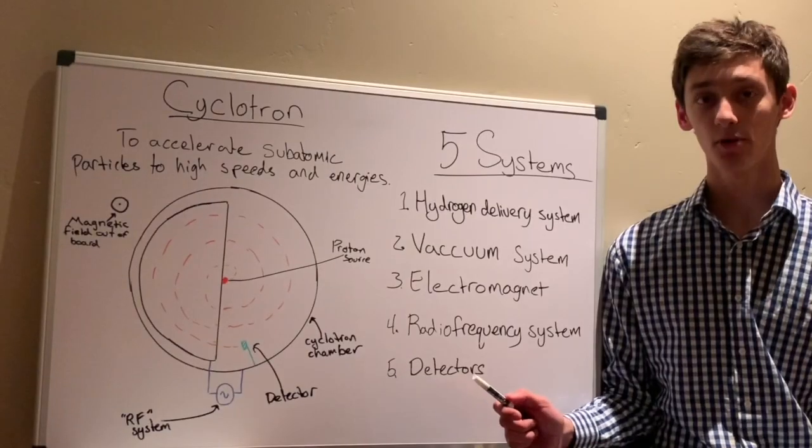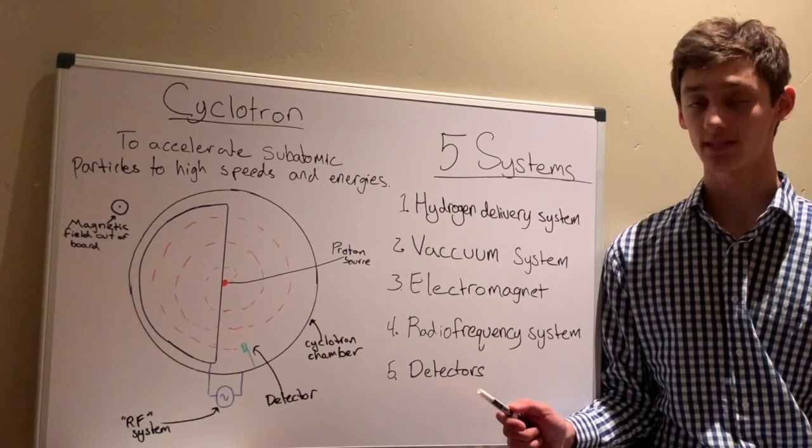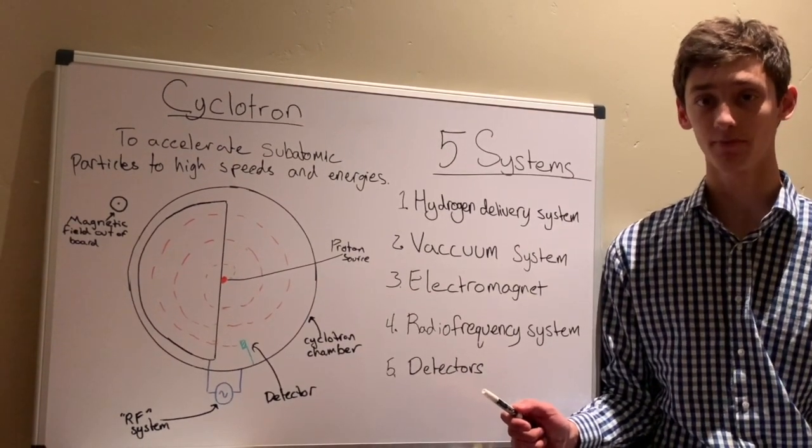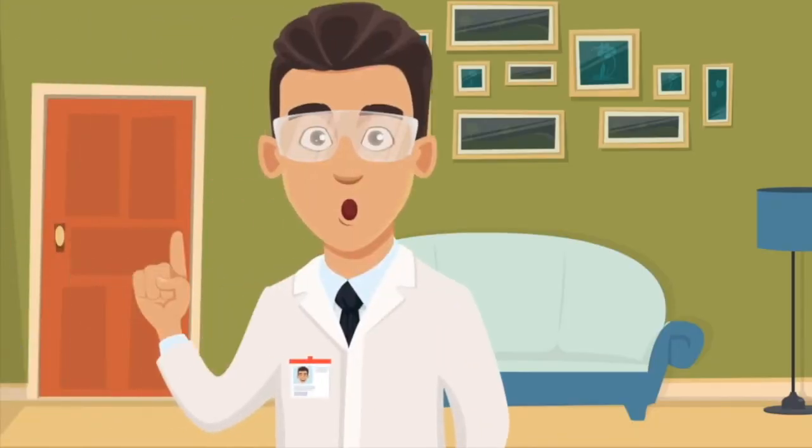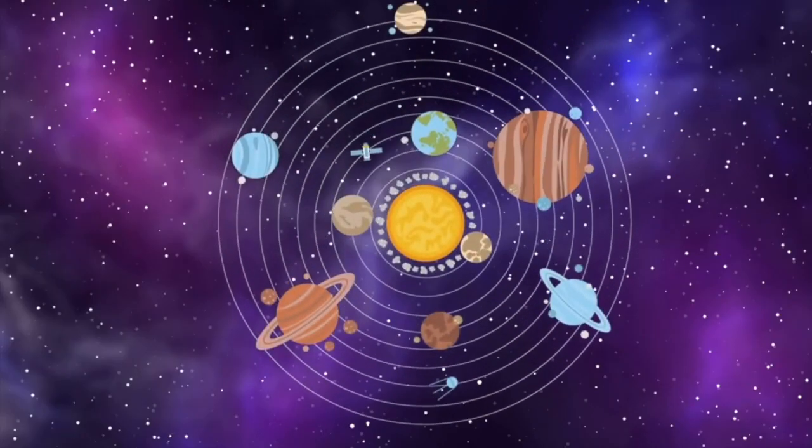Now you may be wondering, what is a cyclotron and how does it work? The purpose of a particle accelerator is to accelerate subatomic particles to extremely high speeds and energies. This allows physicists to probe the fundamental building blocks that make up our universe.